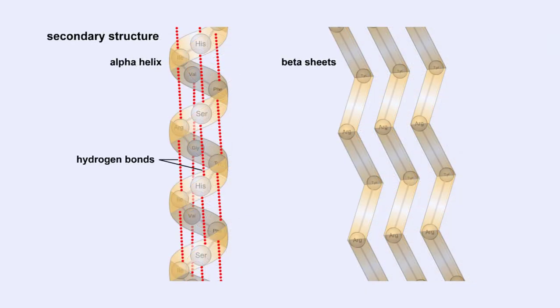One type of secondary structure is the alpha helix. The helical shape is maintained by hydrogen bonds, as shown here.